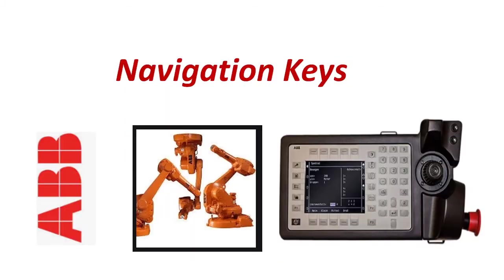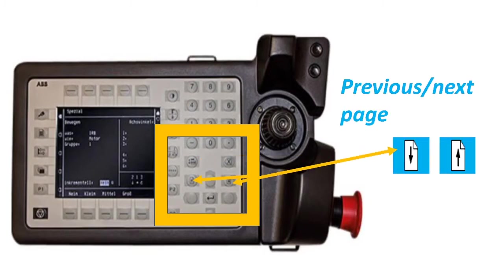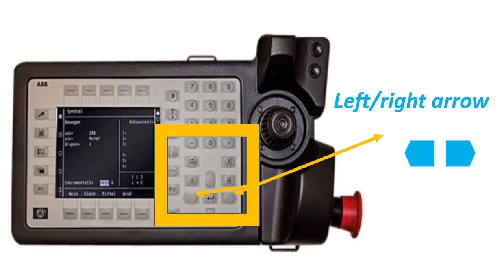Our next topic is Navigation Keys. List: press this key to move the cursor from one part of the window to another, normally separated by a double line. Previous or Next Page: press this key to see the next and previous page. Up and down arrows: press this key to move the cursor up and down. Left and right arrows key: press this key to move the cursor to the left or to the right.